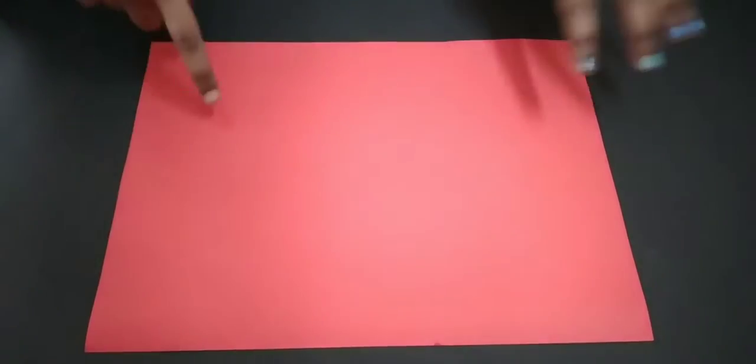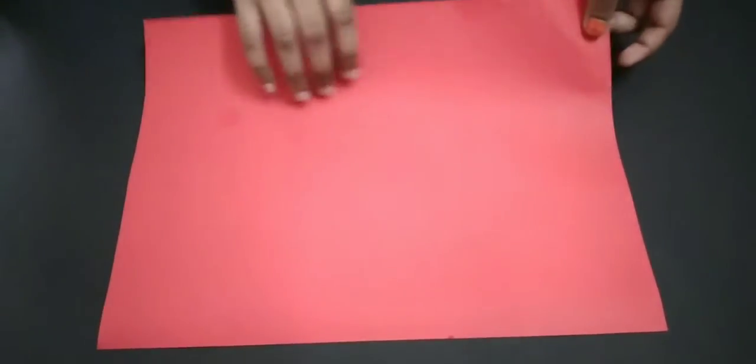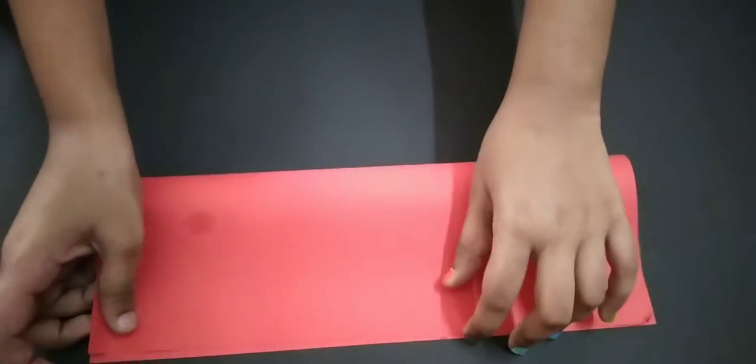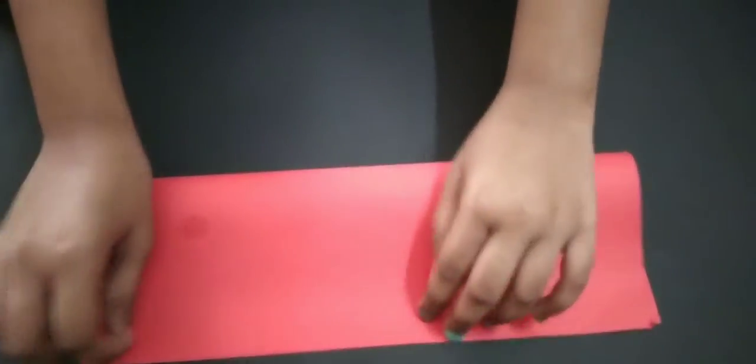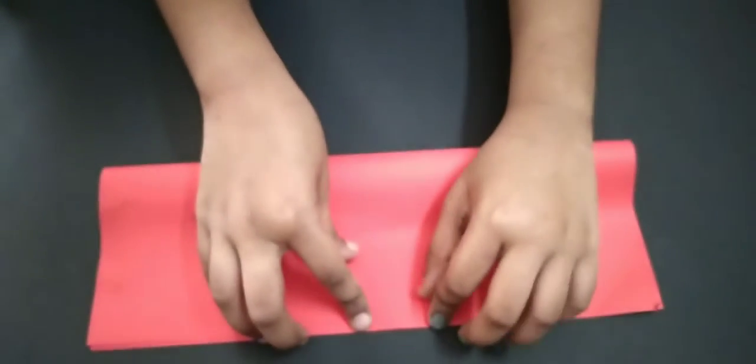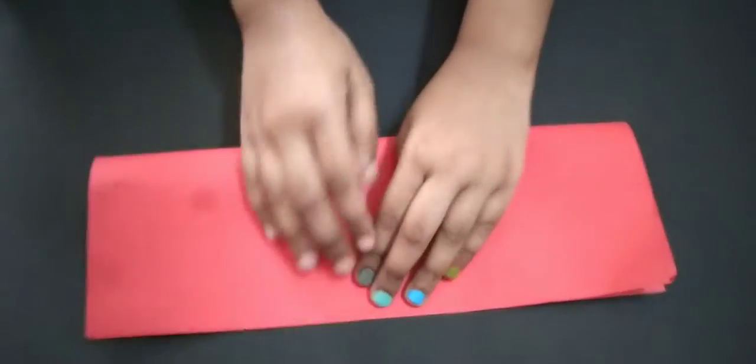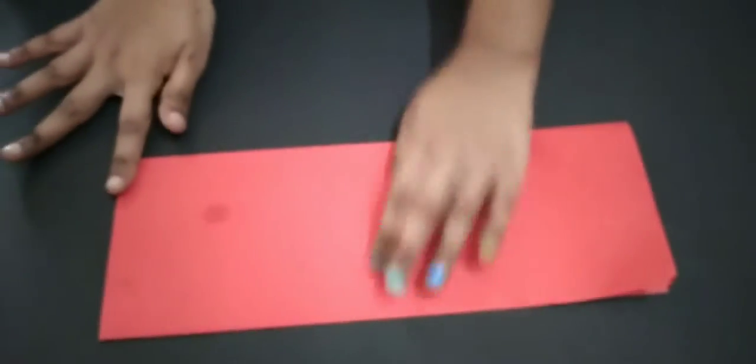Hi everyone, welcome to JJ Arts and Crafts. So today let's see how to make a paper phone stand using an A4 sheet paper or a color paper. You have to fold the paper in half like this.